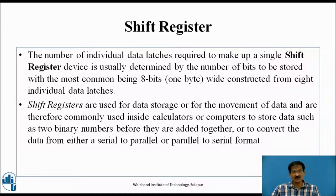The number of individual data latches required to make up a single shift register device is usually determined by the number of bits to be stored, with the most common being 8 bits (1 byte), constructed from 8 individual data latches. Shift registers are used for data storage or for the movement of data, and are commonly used inside calculators or computers to store data such as two binary numbers before they are added together, or to convert data from serial to parallel or parallel to serial format.